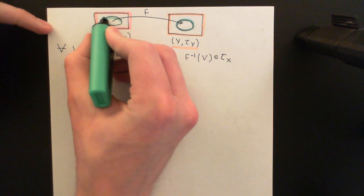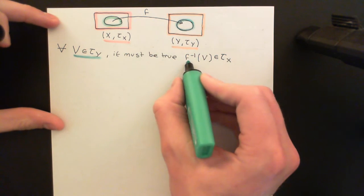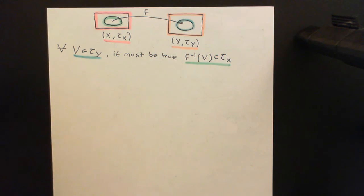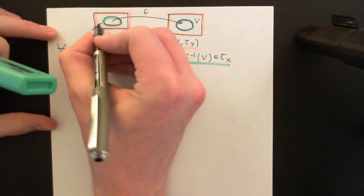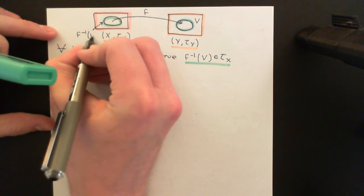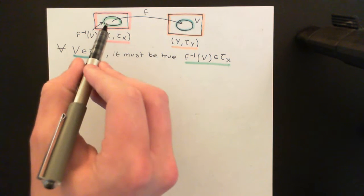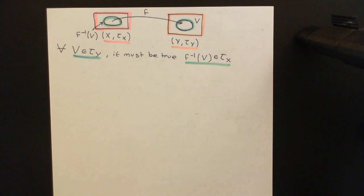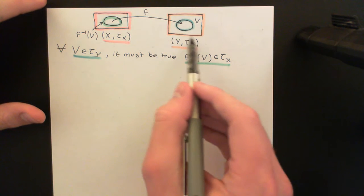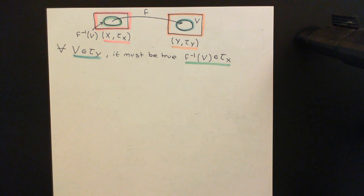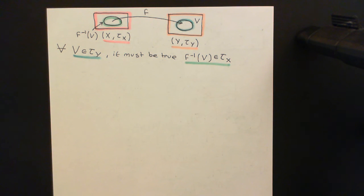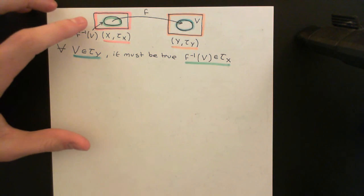Here is my picture of the pre-image of the subset V in the domain topological space. Here is V, and here is the pre-image of V in the domain topological space. I'm insisting that this pre-image must be in the topology on the domain topological space, and that has to be true no matter what open set you use from the codomain topological space's topology. So that's the definition of a continuous function. Now let's have a look at what happens if we restrict our attention down to some subset of our domain topological space.